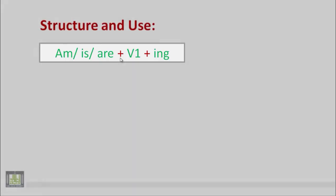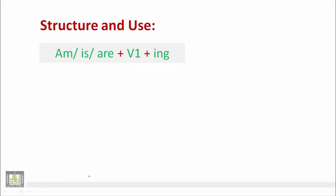Of course, we use am with I. We use is with singular nouns, نستخدم is مع الأسماء المفردة, or what represents he, she, it. And we use are with plural nouns, نستخدم مع أسماء الجمع, or what represents we, you, they.